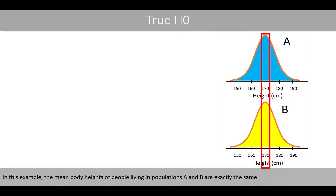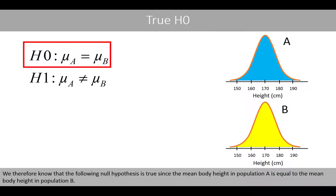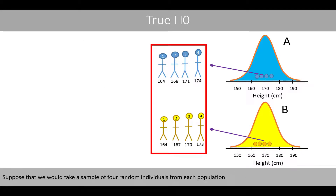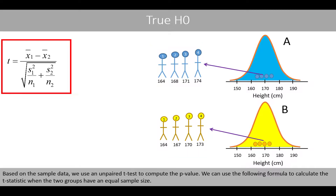let's use the same example as we discussed in the video about type 1 and 2 errors. In this example, the mean body heights of people living in population A and B are exactly the same. We therefore know that the following null hypothesis is true, since the mean body height in population A is equal to the mean body height in population B. Suppose that we would take a sample of four random individuals from each population. Based on the sample data, we use an unpaired t-test to compute the p-value.